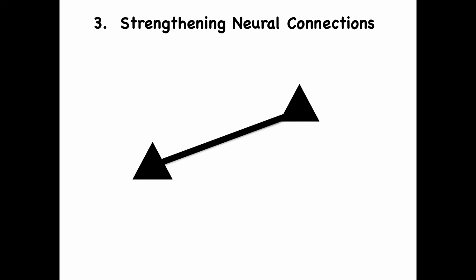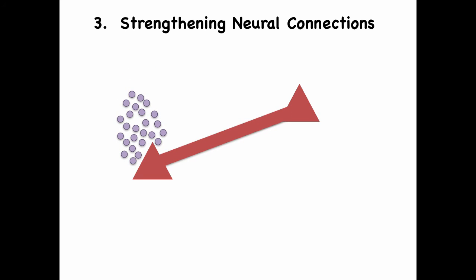This can happen if certain neurochemicals are present when this link is activated. For example, you may have heard of dopamine. This is a neurochemical that makes a very significant contribution towards enhancing and strengthening learned information.